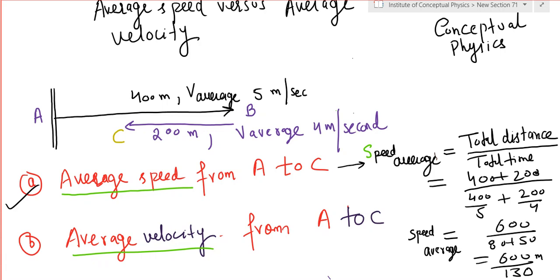We can find the time from A to B because we know the velocity and the distance between A to B. Similarly we can find the time it takes to travel from B to C.